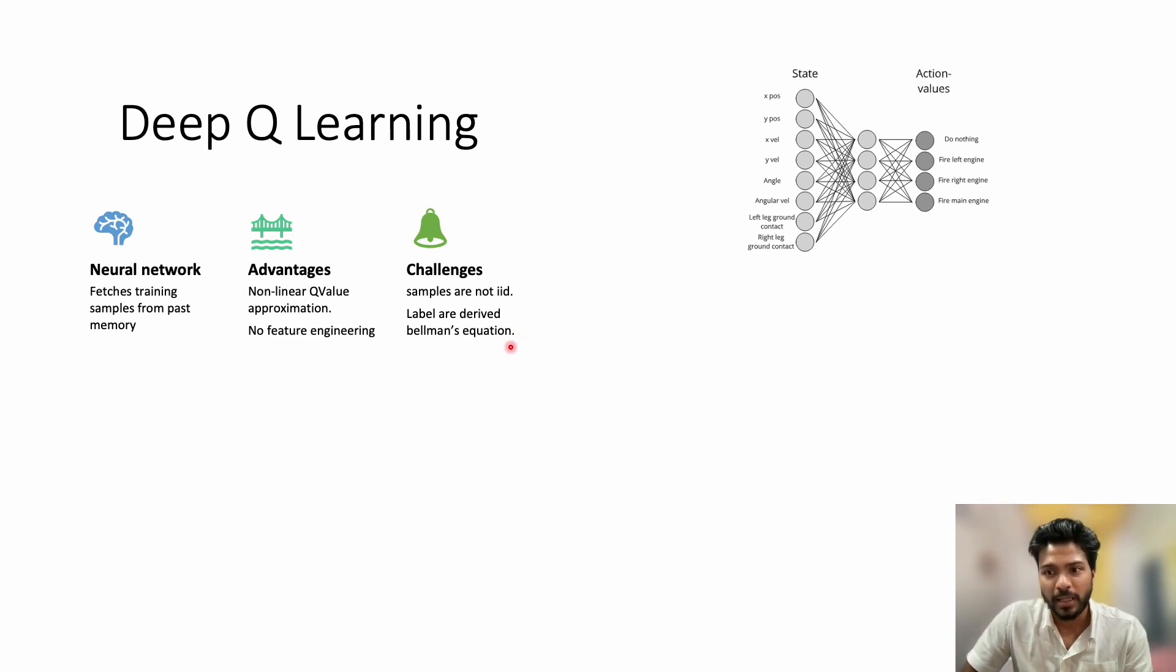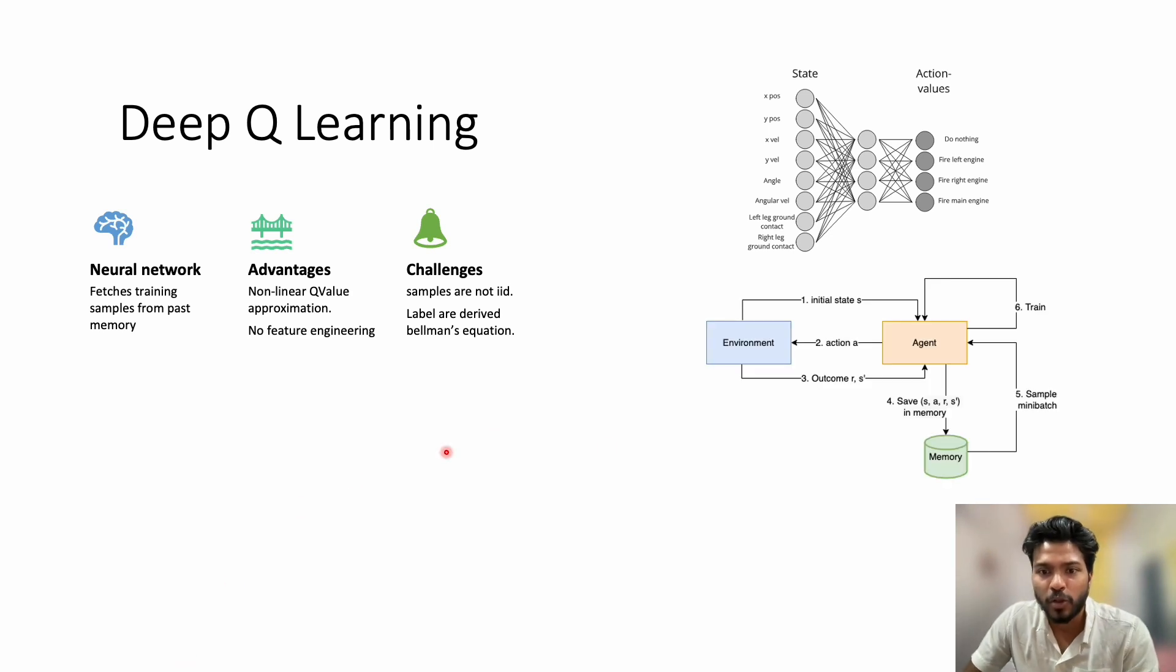Conventional deep learning assumes IID for all the training samples. But RL training samples are generated from experience and they are highly correlated. To solve this, DQL uses a mechanism called experience replay where the experiences are stored in memory and examples are sampled randomly during training. But it also introduces two additional hyperparameters: the replay memory size and the neural network architecture.